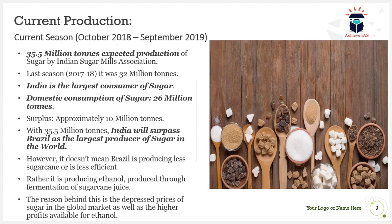What should concern us is that Brazil is not producing less sugarcane — they are deliberately reducing sugar production. They are using sugarcane to produce ethanol, which is more profitable, because the global market is showing depressed prices for sugar. High profits are available in ethanol, so Brazil farmers are diverting sugarcane toward ethanol production rather than sugar production.